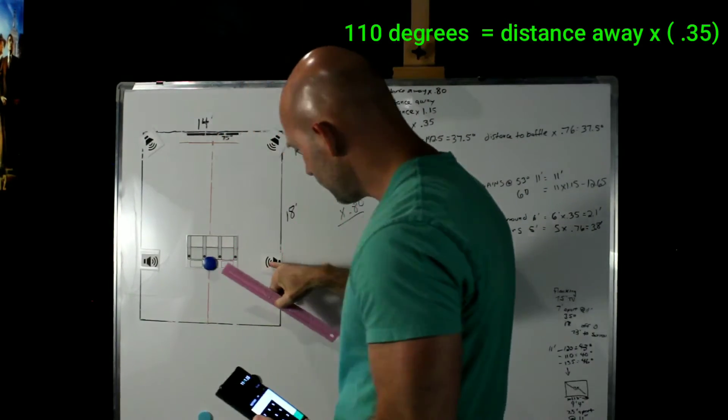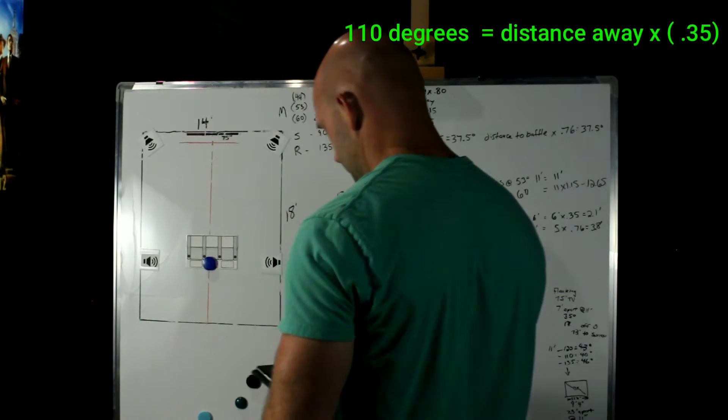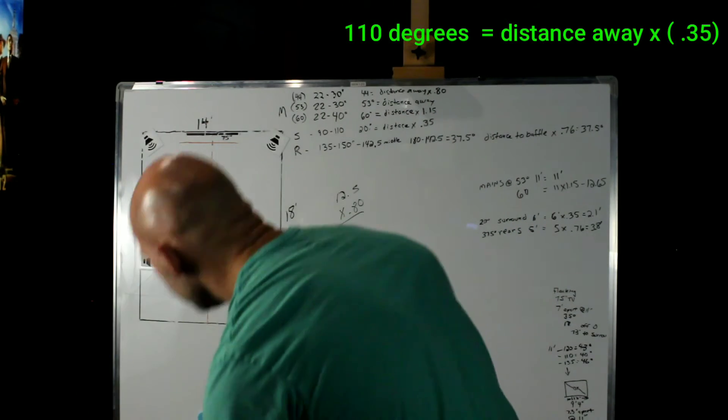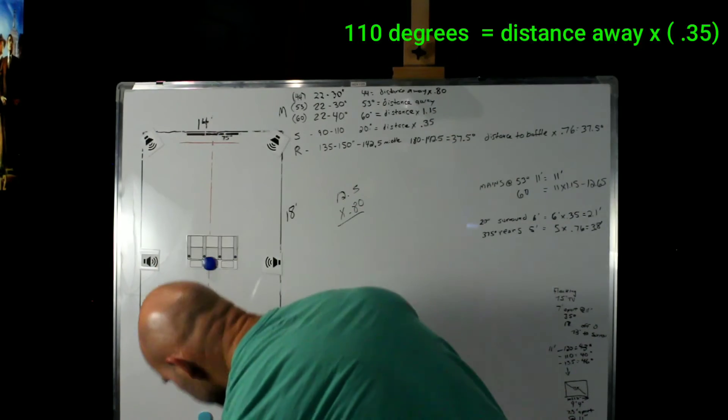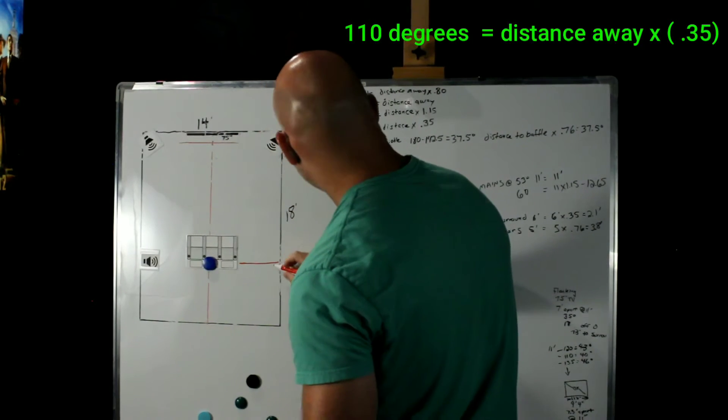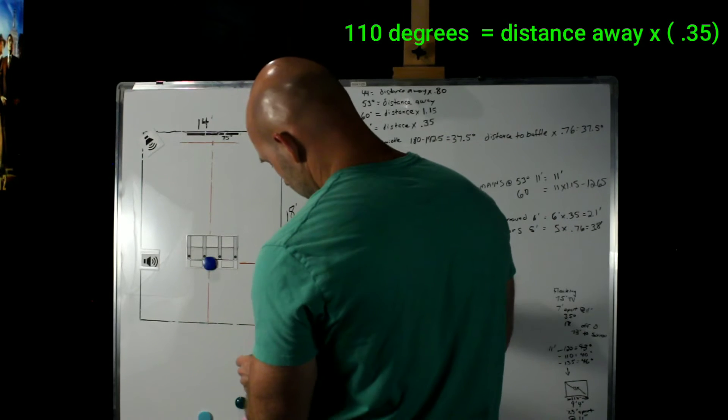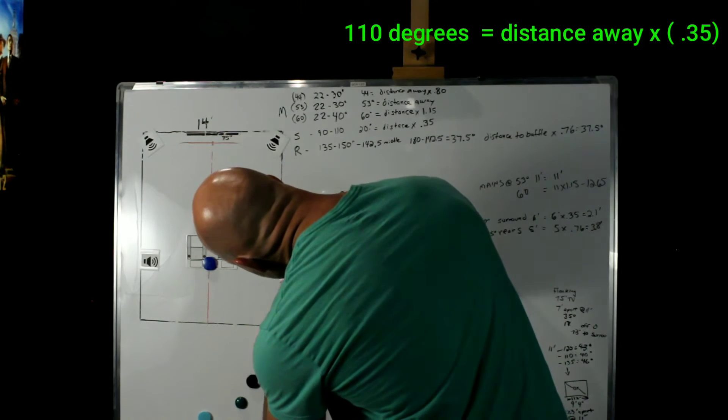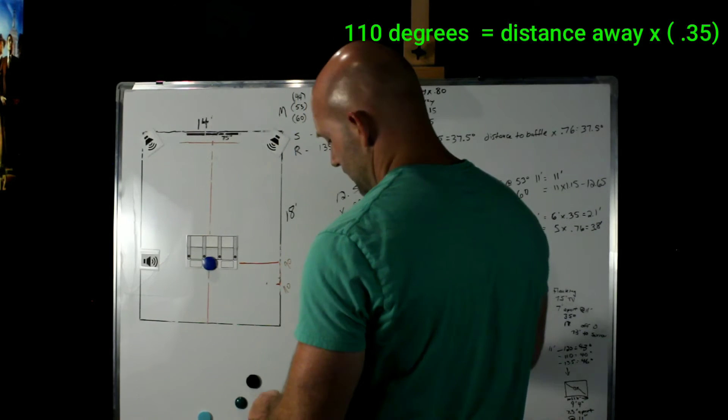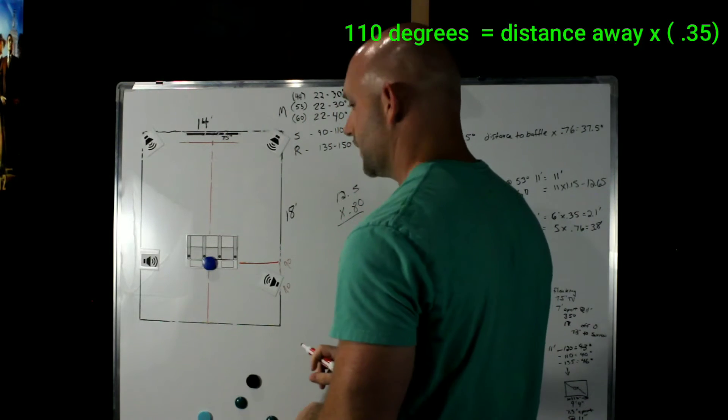we're going to multiply times 0.35 or the distance from this point times 0.35. And so that distance, now remember we're going to the front of the baffle or the front of the speaker. That's where the sound is coming from. And we're going to call it 6 feet. So 6 times 0.35 is 2.1 feet. So we need to move this speaker down. You remember you're going to be cutting across right here is 90 degrees. We're going to go 2.1 feet and we can measure it. So this is 110 degrees and actually to the front of the baffle. And we're going to angle it. We're always going to angle our speakers towards our main listening position.